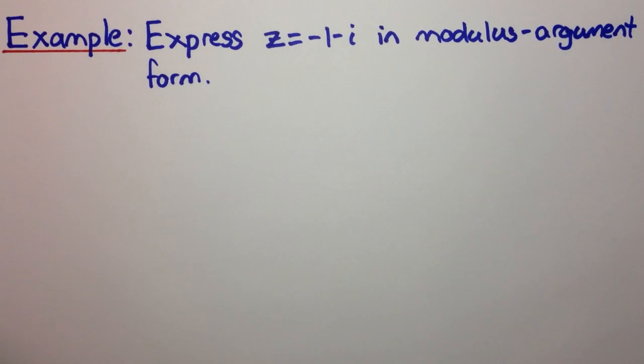Okay, welcome to today's video, everyone. In this video, we'll be seeing two examples: one converting from mod-arg form into Cartesian form, and one in reverse, from Cartesian form to mod-arg form.